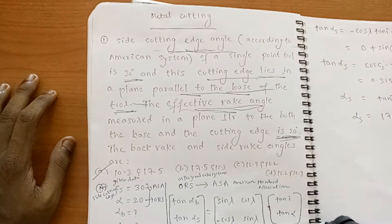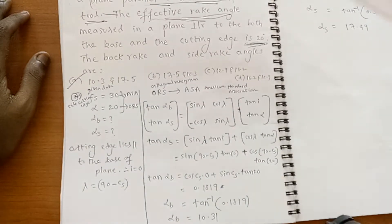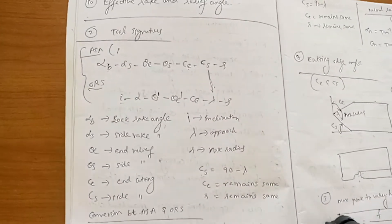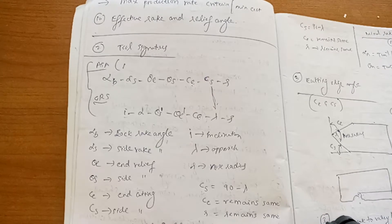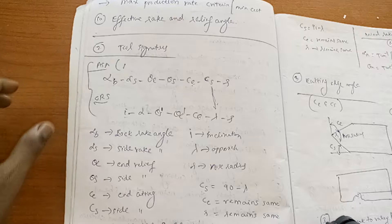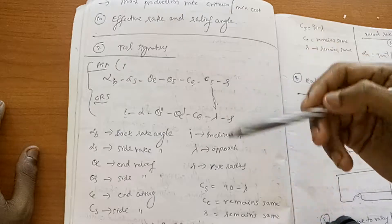What are these angles? If you want to be familiarized with these angles, you have to know about tool signatures. There are two systems for the tool signature. One is American Standard Association, another one is orthogonal rake system. For machining tool there will be many number of angles. To show those angles in sequence, these are the two systems.